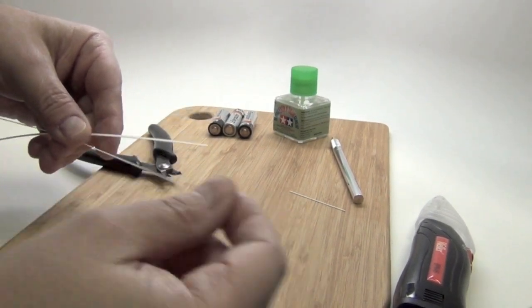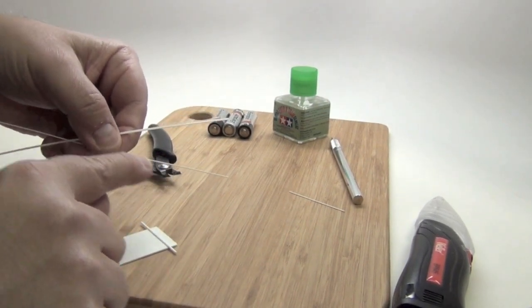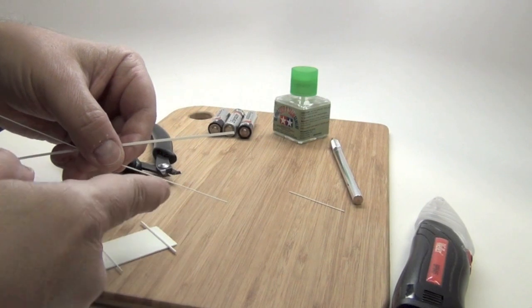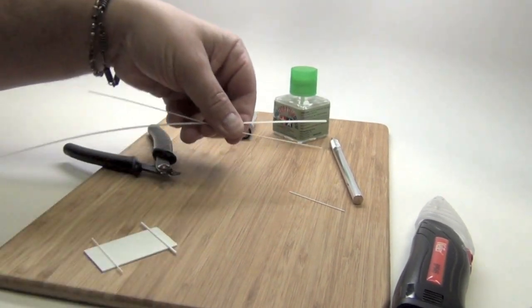I've also, this is not half round, this is a styrene rod that you could also pull, you can stretch between, you could stretch a piece of sprue and use it.